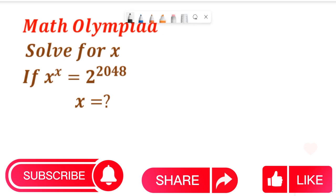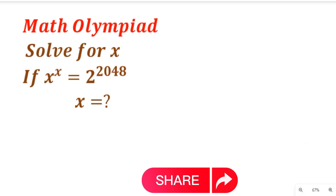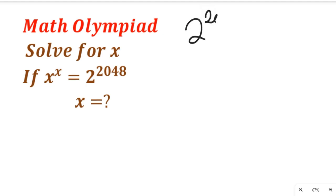Now let's solve this question. To solve this question, all we simply need to do is to apply some logic and also apply some rules in indices. Remember that 2 to the power of 2048 can be written as 2 to the power of 2 multiplied by 1024.